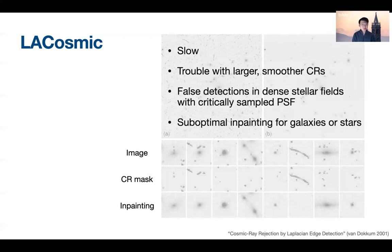The biggest trouble with LaCosmic is that it's very slow — doing cosmic ray rejection for one single Hubble image takes around half a minute to a minute on a laptop. Secondly, because it's based on edge detection, it struggles when the cosmic ray is very extended, making it look rather smooth. Also, when stars get crowded they don't look symmetrical anymore, which is the hardest case for LaCosmic. And the way it replaces cosmic ray pixels — by taking the median of surrounding pixels — could definitely be improved.